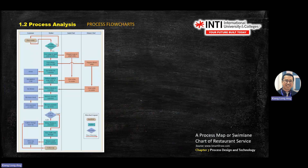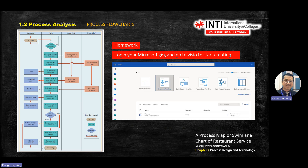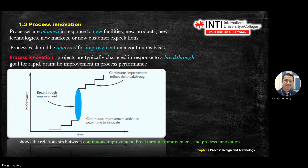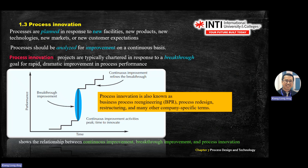Another process analysis example shows a restaurant process flow involving the customer, waiter, salad chef, and dinner chef, and how they interact. Process innovation happens in response to a breakthrough — a rapid dramatic improvement in a process. On a performance-versus-time graph, a breakthrough shows a sharp performance increase in a very short time.